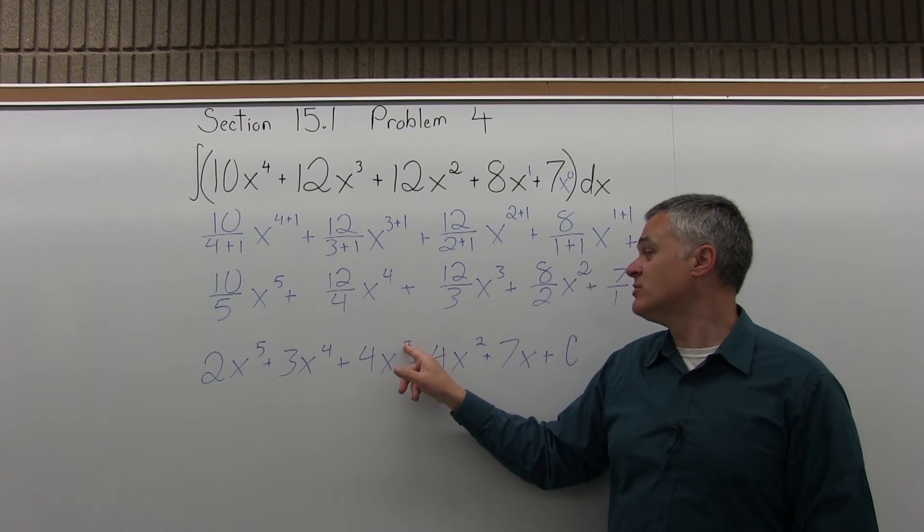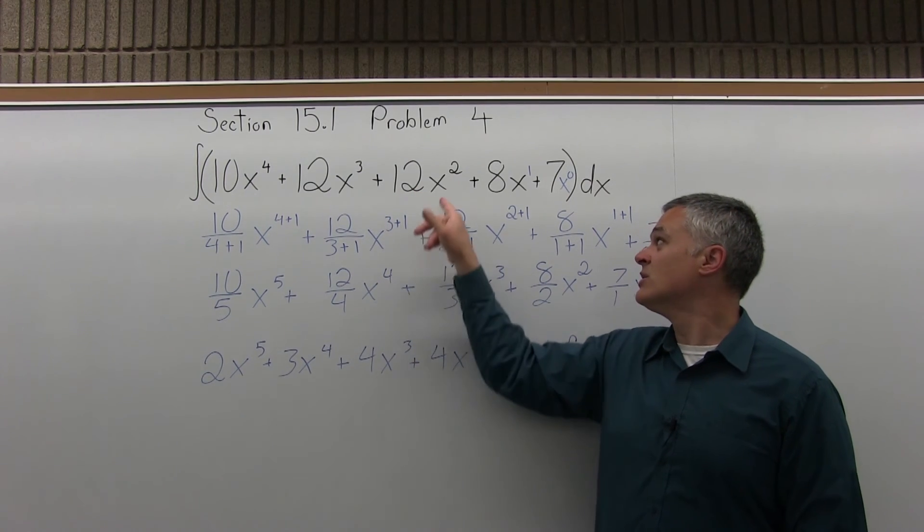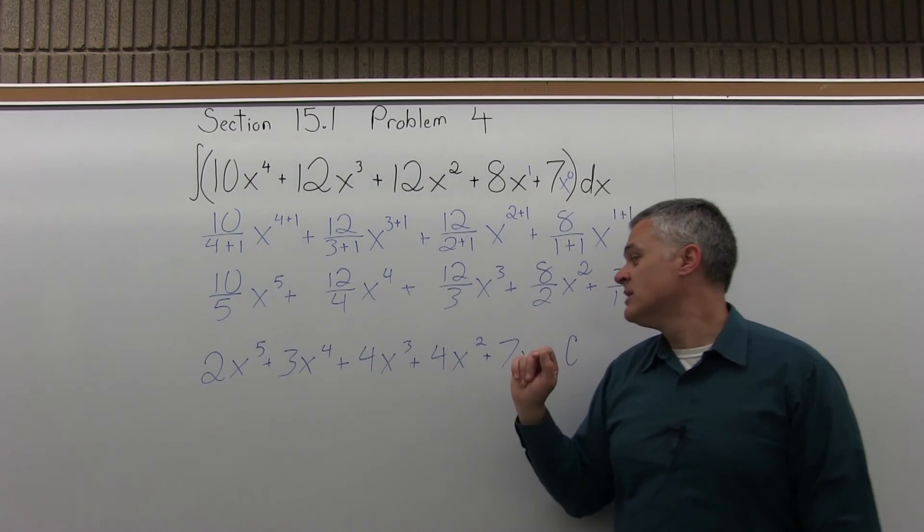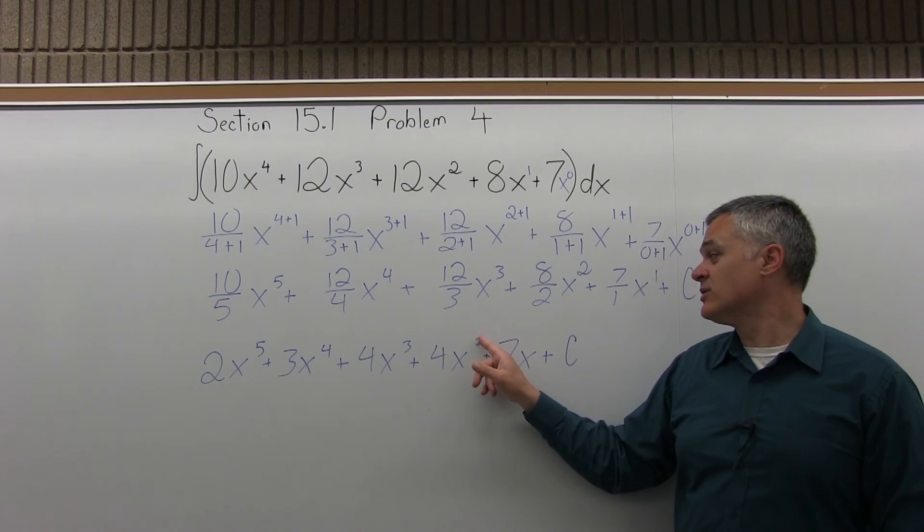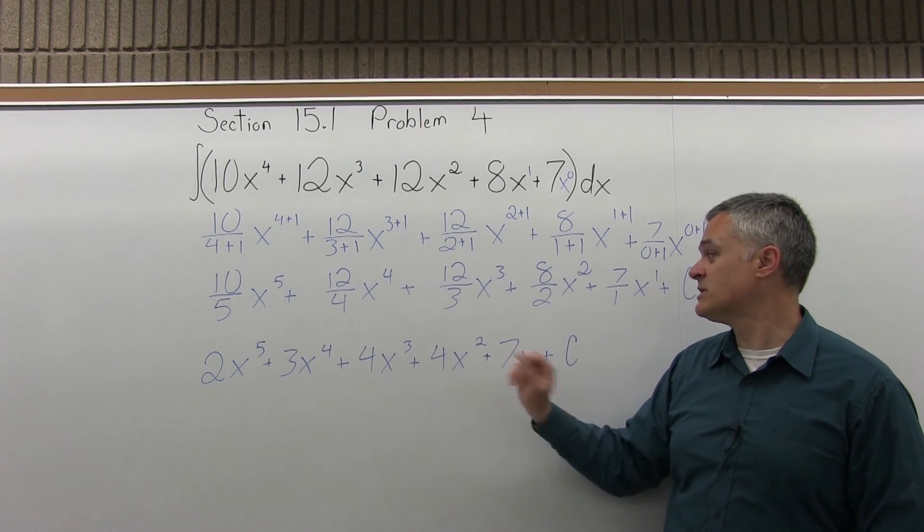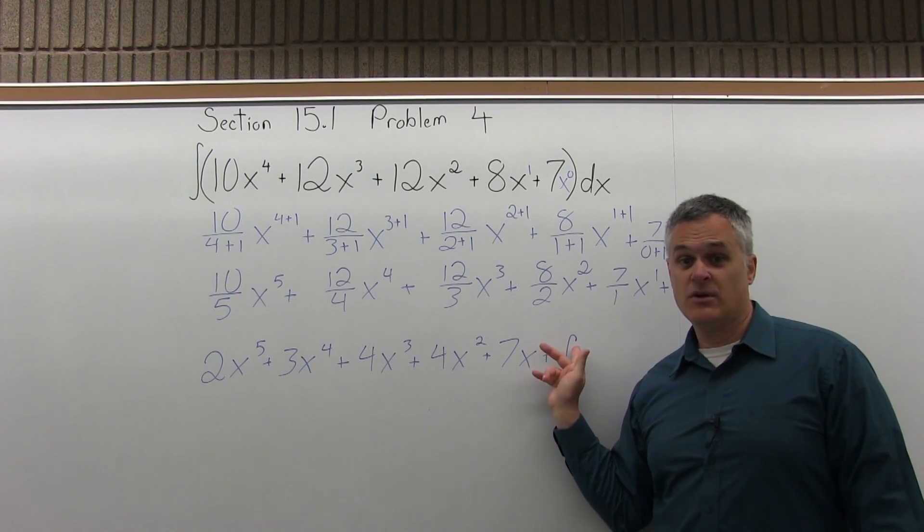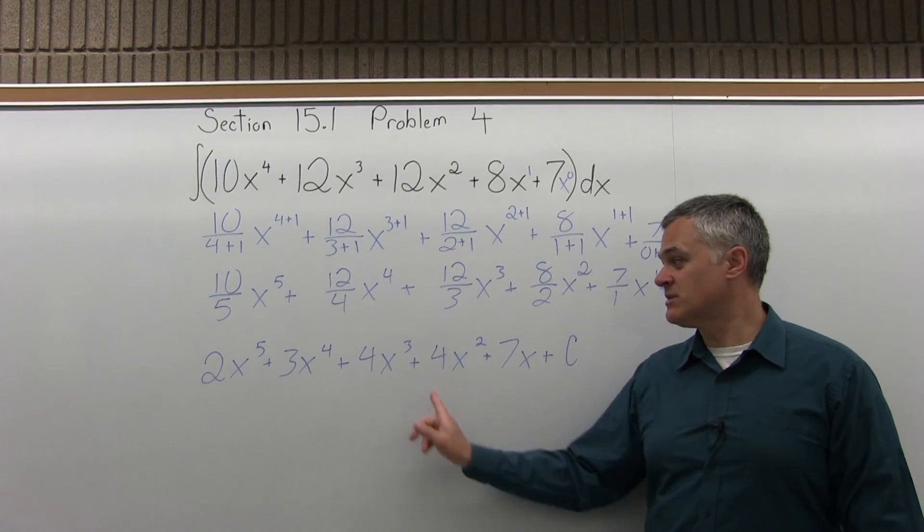The next piece, 4x cubed, the 3 comes down times the 4, 3 times 4 is 12x, 1 less power is 2nd power. The next piece, the 4x squared, where the 2 comes down times the 4, 2 times 4 is 8x, 1 less power is 1st power. 7x would give me a 7. The constant, the number, would just go away. So this must be the right answer.